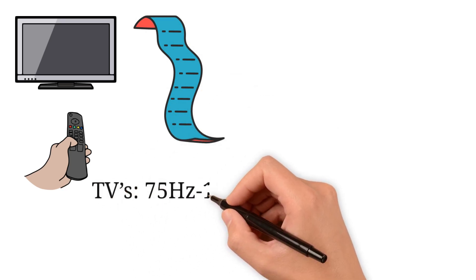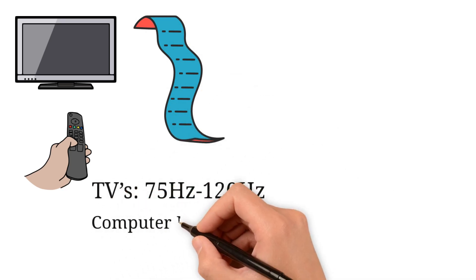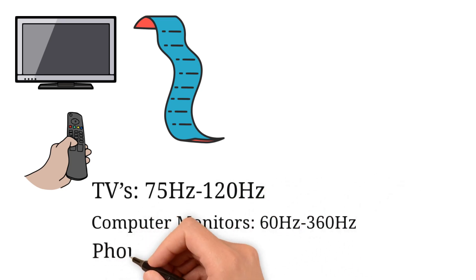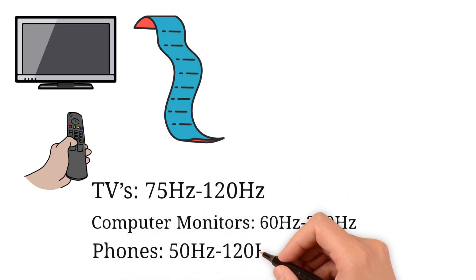TVs: 75Hz, 120Hz. Computer monitors: 60Hz, 360Hz. Phones: 60Hz, 120Hz.